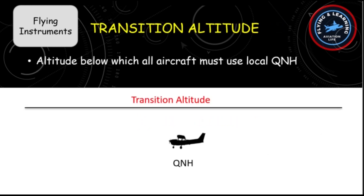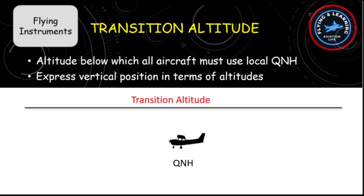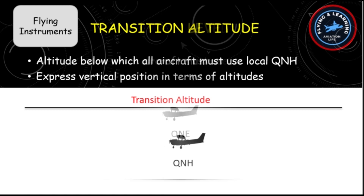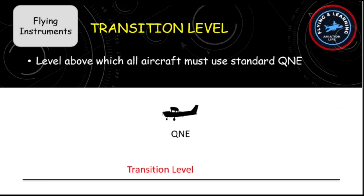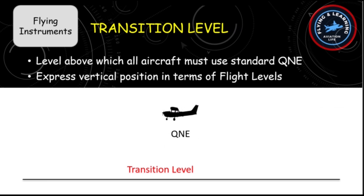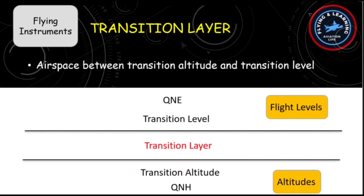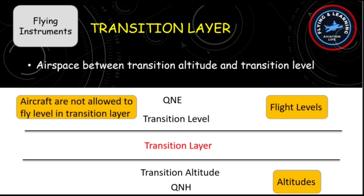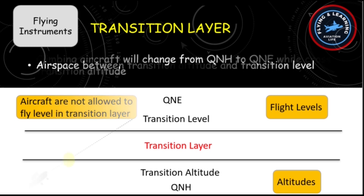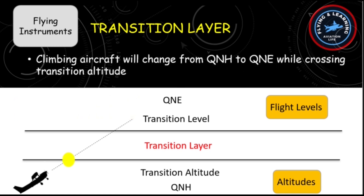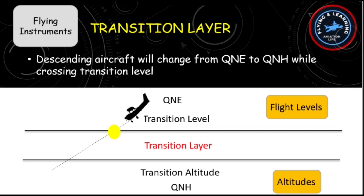Transition altitude is the altitude below which all aircraft must use local QNH and therefore must express vertical position in terms of altitudes. Transition level is the level above which all aircraft must use standard QNE and therefore must express vertical position in terms of flight levels. Finally, the transition layer is the airspace between transition altitude and transition level. It is important to note that aircraft are not allowed to fly level within the transition layer.